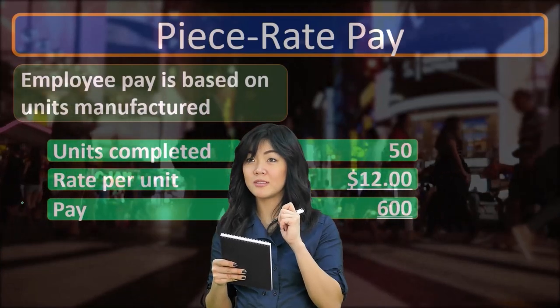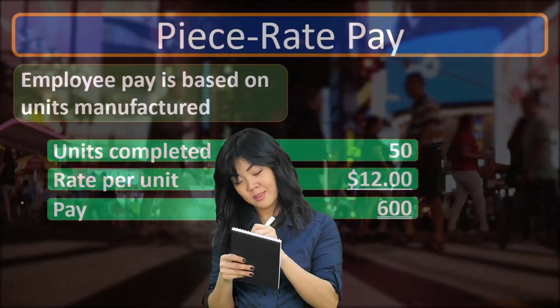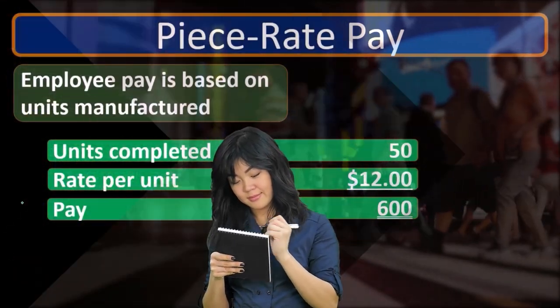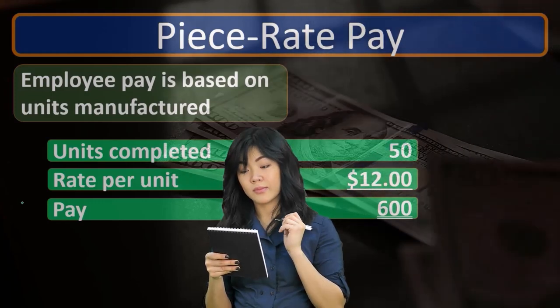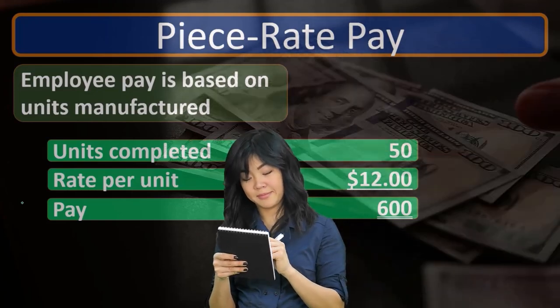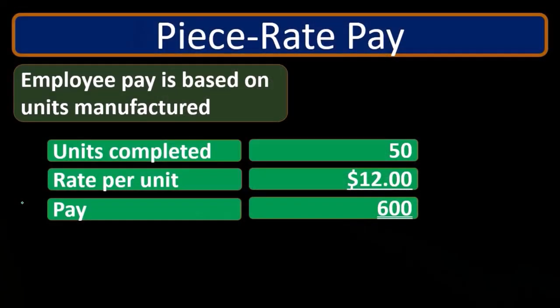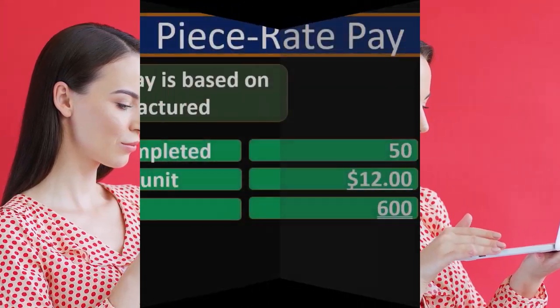The benefit of piece rate pay is that with hourly pay, the incentive is for people to spend less time being productive, since extra productivity doesn't increase earnings. The goal here is to have people spend their time being productive, and to pay the more productive people more money through this system.